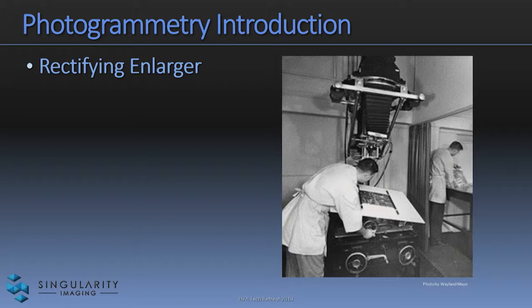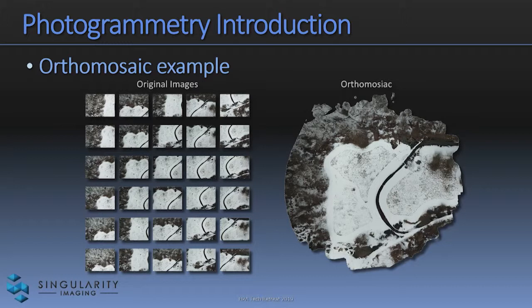How did you do an ortho photograph in the early days? Here's a picture of a rectifying enlarger. Basically you could alter the table or the lens to compensate for the geometric distortions from the source photograph if it was taken at an oblique angle — before we had the ability to transform digitally. Here's a simple flyover of a little hill: the source photographs are digitally processed, ortho rectified, and then merged.